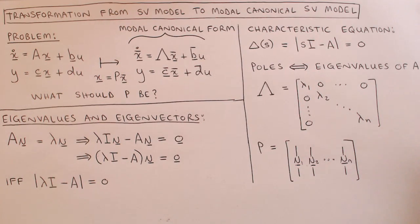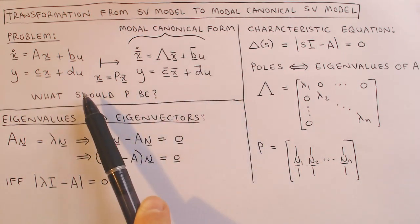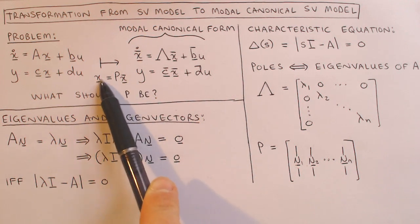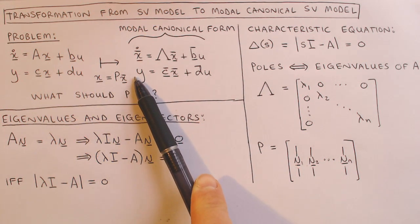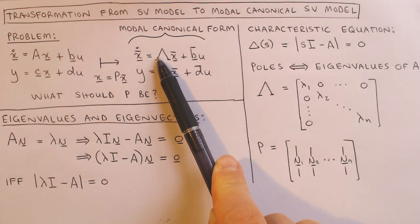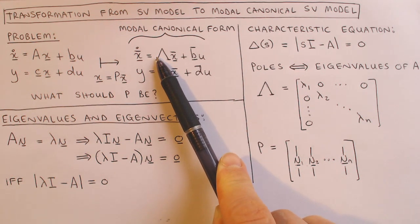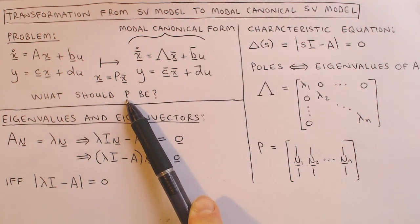The problem we want to solve is to transform a state variable model to the modal canonical form by redefining the states according to the state transformation. We will only look at the case where the system has distinct real poles. In this case the new A matrix, capital lambda, is a diagonal matrix with the poles on the diagonal. The problem is therefore to find the transformation matrix P such that the new A matrix has the required form.